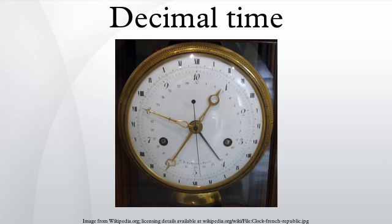Decimal time was officially introduced during the French Revolution. Jean-Charles de Borda made a proposal for decimal time on 5 November 1792. The National Convention issued a decree on 5 October 1793 stating that the day, from midnight to midnight, is divided into 10 parts, each part into 10 others, and so forth until the smallest measurable portion of duration. These parts were named on November 24, 1793.